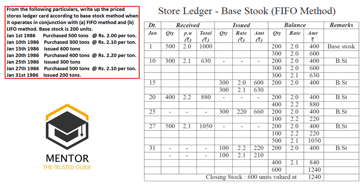The format has columns: date, received, issued, and balance. On 1st January, we received 500 units at 2 per unit, totalling 1000 rupees. In the balance column, 200 units at 2 per unit (400 rupees) are kept as base stock. The remaining 300 units at 2 per unit (600 rupees) are kept as regular stock, ready to be issued to the production department.